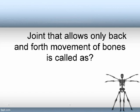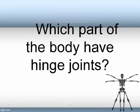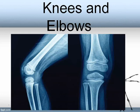The joint that allows only back and forth movement of bones is called a hinge joint. Which part of the body has hinge joints? Knees and elbows.